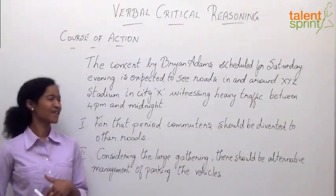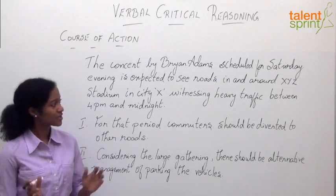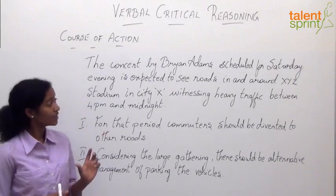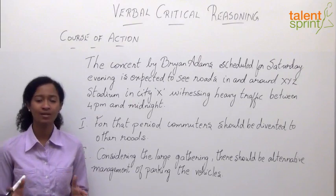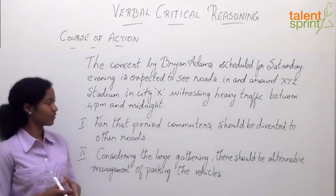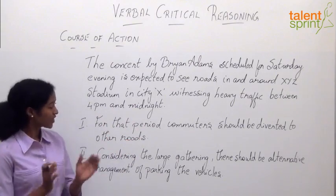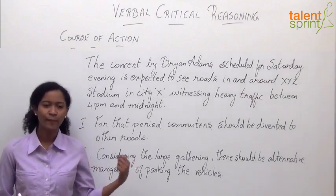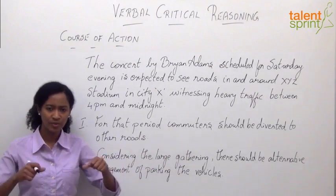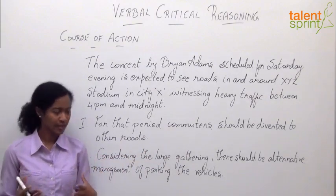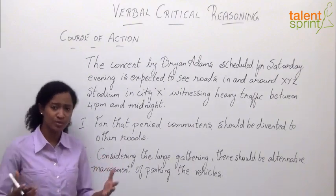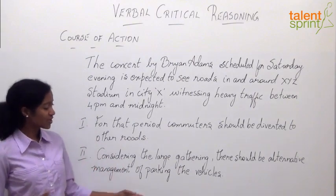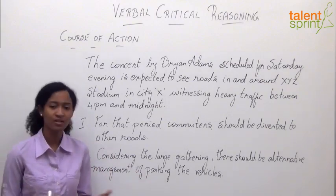Our next statement: the concert by Bryan Adams scheduled for Saturday evening is expected to see roads in and around XYZ Stadium in city X witnessing heavy traffic between 4pm and midnight. We assume each of these to be true. The first course of action: for that period, commuters should be diverted to other roads. Commuters are people who travel by bike, car, or any transport — commuting means travelling. The second course of action: considering the large gathering, there should be alternative management of parking the vehicles.